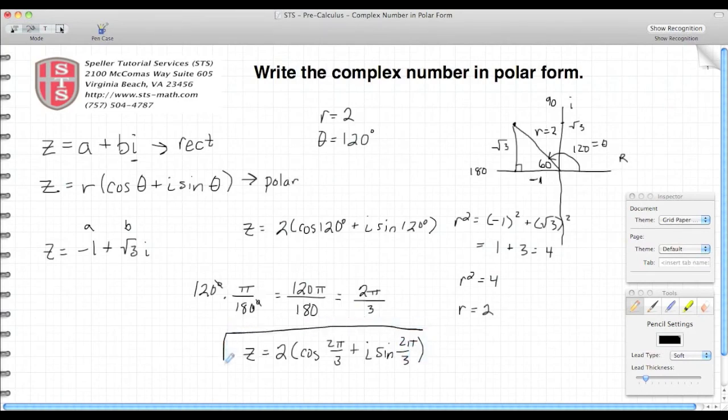So there you have it. When we take the rectangular complex number of z equals negative 1 plus root 3 i, its polar form is what we just figured out. Thank you again for watching another video by Speller Tutorial Services. Please friend us on Facebook and also subscribe on our YouTube channel, both found under the name Speller Tutorial Services.